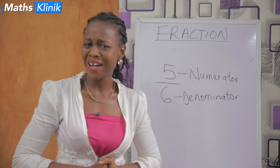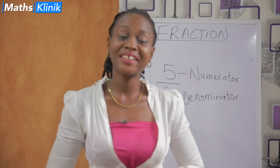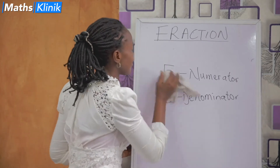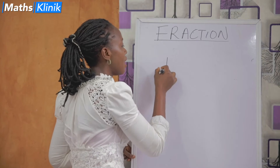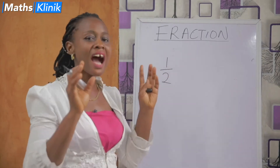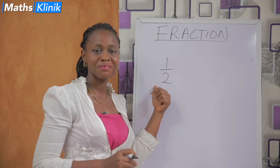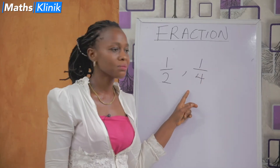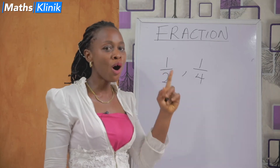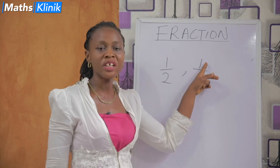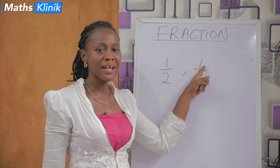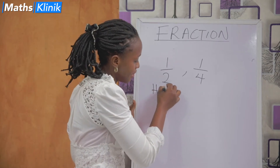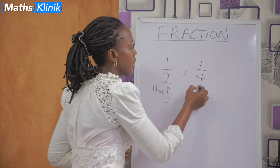There are some common fractions that we see every day in mathematics. The first common fraction is one up over two — we call this half. We have another common fraction which is one up over four — we call this quarter. This means your whole number is divided into four and we have only one part out of it, one out of four. Any number up over four is quarter.